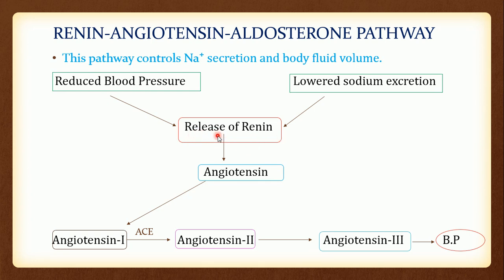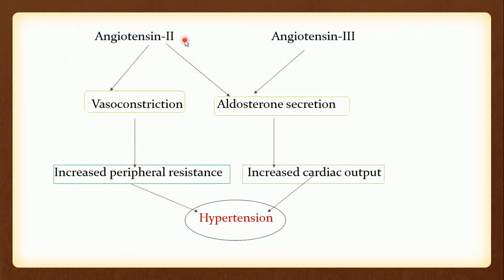When the release of renin occurs, it will activate the release of angiotensin. Angiotensin will activate angiotensin-1, which is a peptide. Next, angiotensin-1 will convert into angiotensin-2 by the enzyme angiotensin-converting enzyme. Angiotensin-2 will again convert into angiotensin-3. Both angiotensin-2 and angiotensin-3 cause vasoconstriction and aldosterone secretion. Vasoconstriction leads to increased peripheral resistance, and aldosterone secretion leads to increased cardiac output. Both will ultimately lead to hypertension.